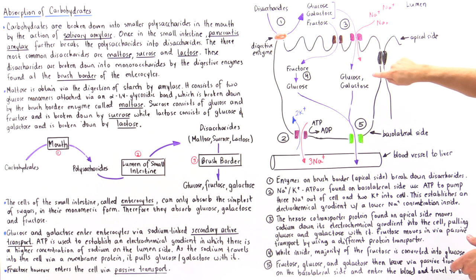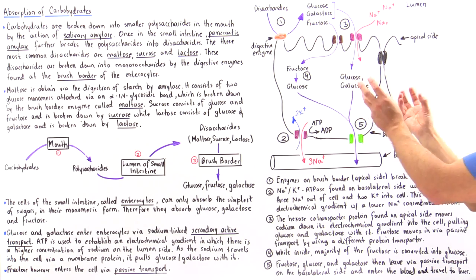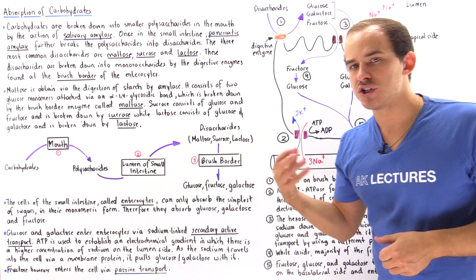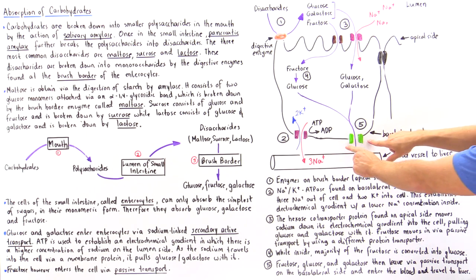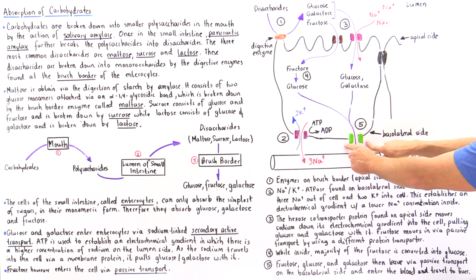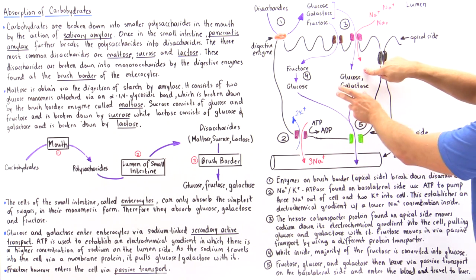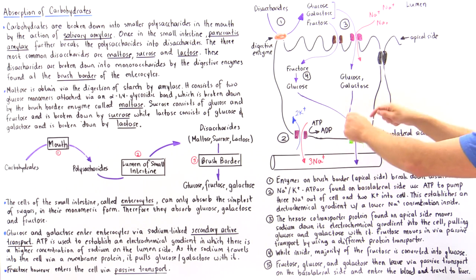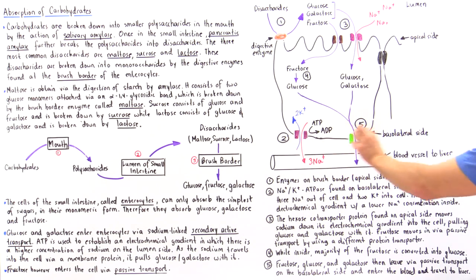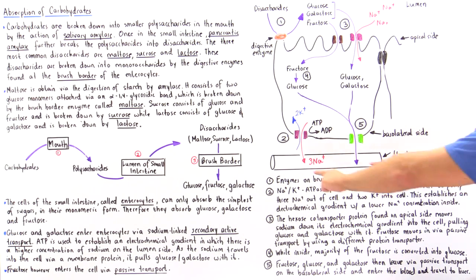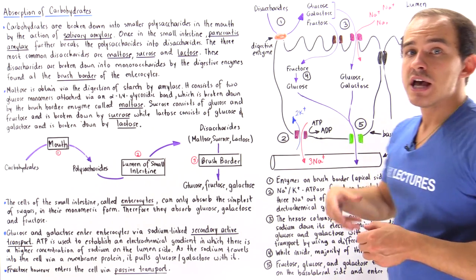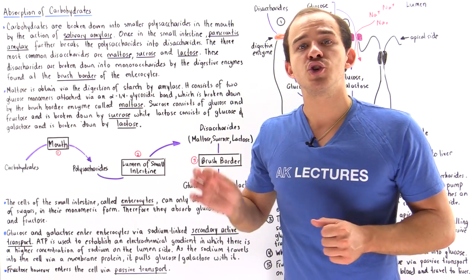As soon as glucose, galactose, and fructose are inside the cell, they can then diffuse via passive transport through a special type of protein found on the basolateral side. The glucose, galactose, and fructose will ultimately be transported into our blood vessels found very close to the basolateral side, and these blood vessels will carry these sugars via the portal vein into our liver.